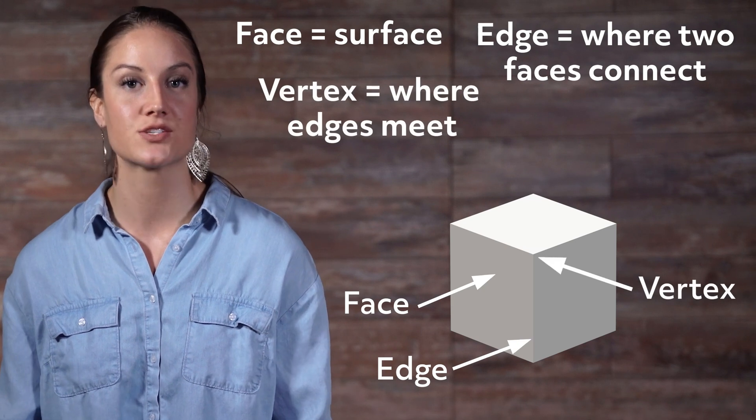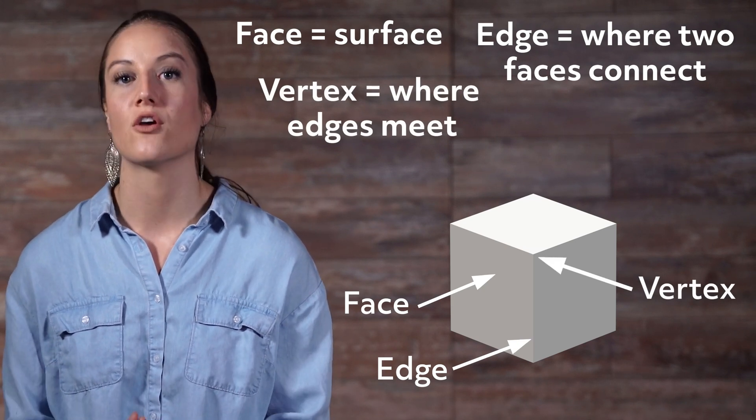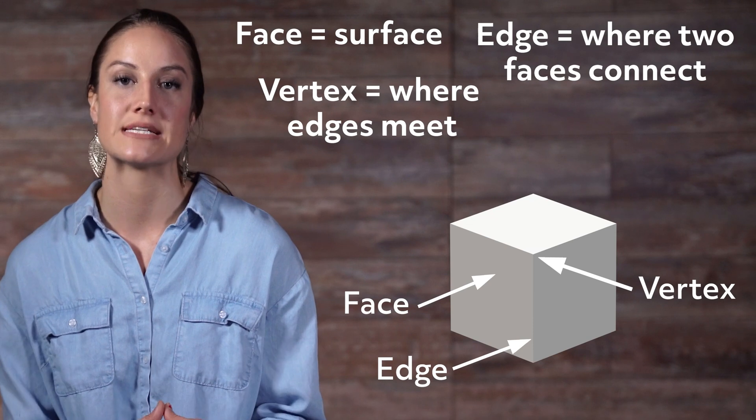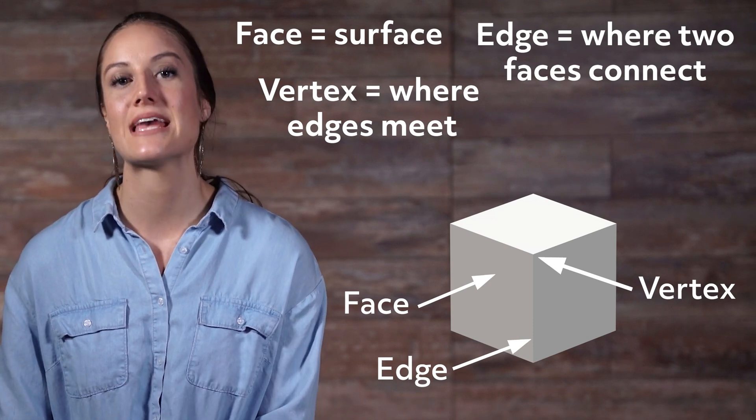A vertex, or vertices when you're referring to more than one, are the corners, or where the edges come together. A cube has eight vertices.